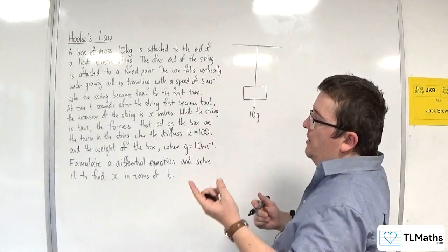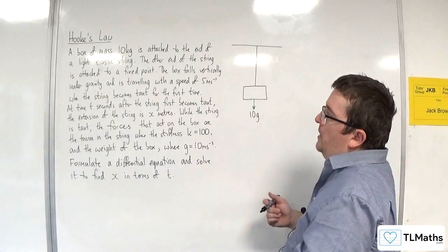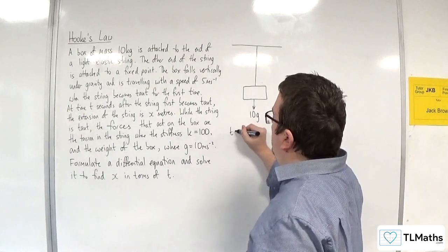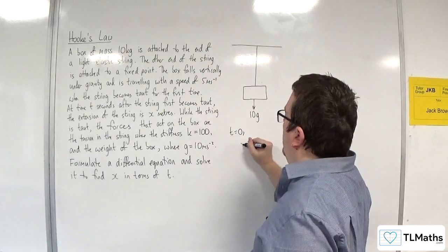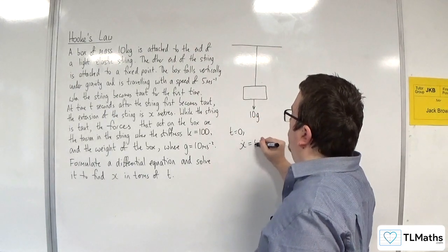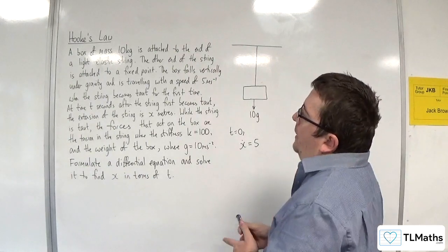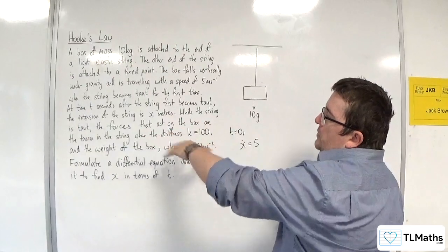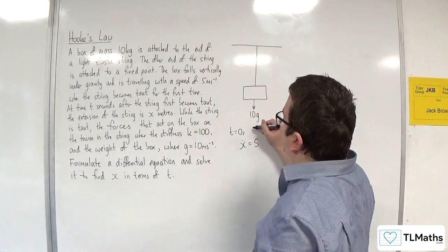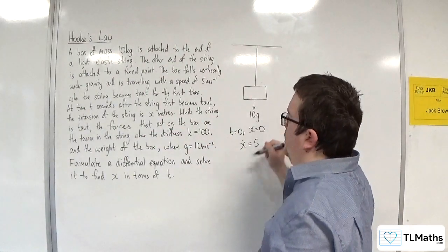So we're going to take time as 0 at the point where it becomes taut. So we know that when t is 0, the speed is 5 meters per second, so x dot is equal to 5. At time t seconds after the string first becomes taut, the extension of the string is x meters. So that's telling us that initially x is 0.